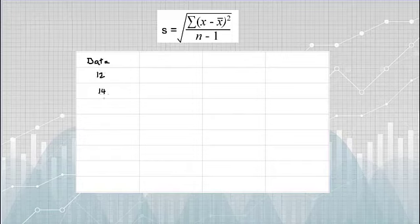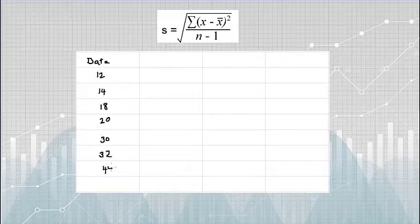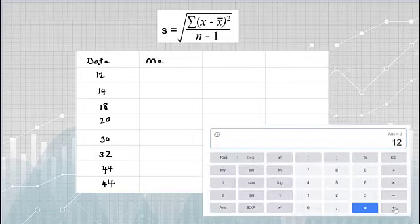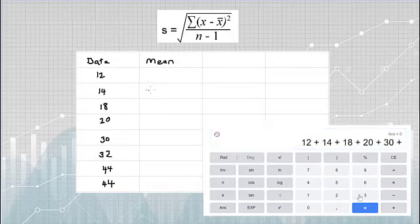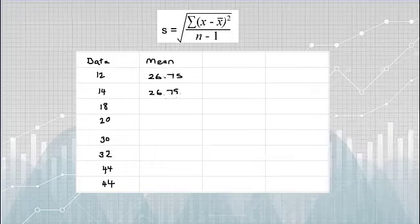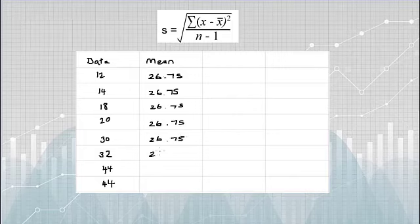In the first column I'm going to jot down my set of eight data points. Next I want to find the mean. The mean is just the sum of all of those eight data points divided by the number of points, which is eight. So my mean is 26.75. I'm going to write that all the way down the column.